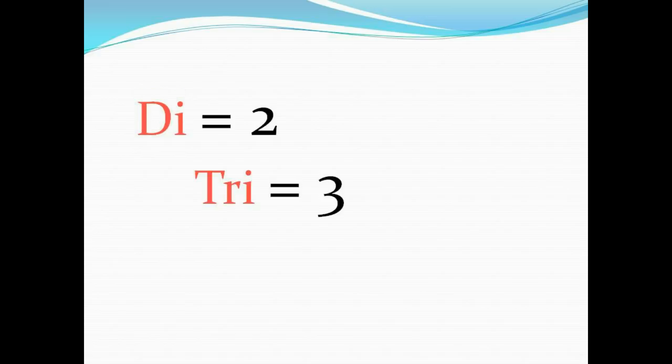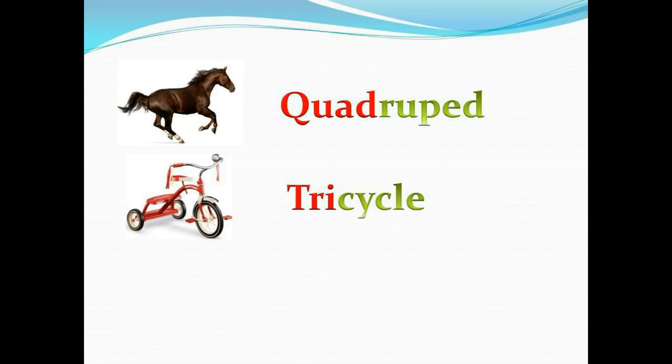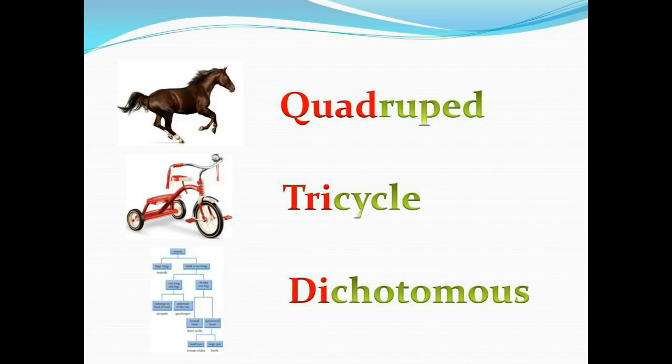Di means two, just like tri means three and quad means four. There are four legs on a quadruped, three wheels on a tricycle, and two choices in a dichotomous key.